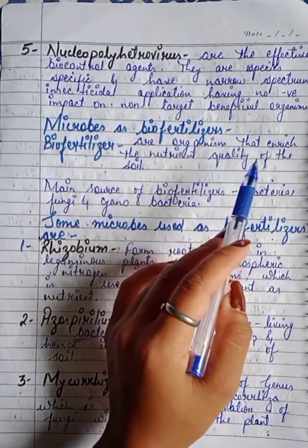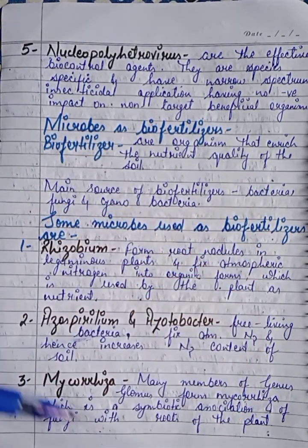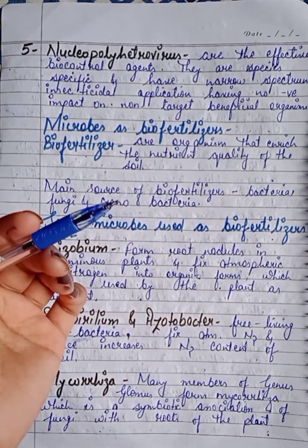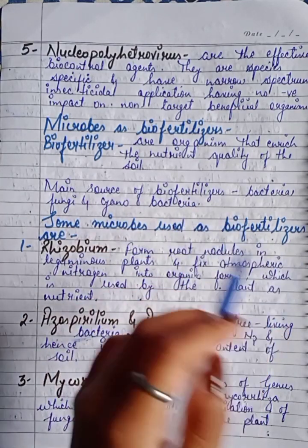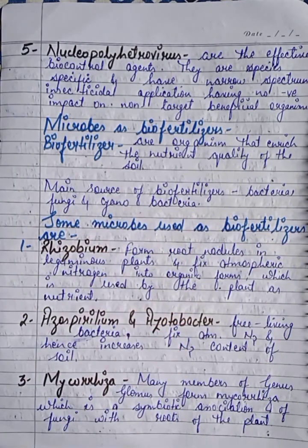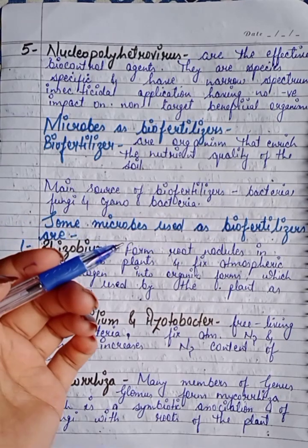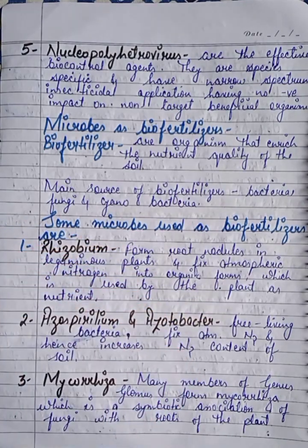Now we will look at microbes as biofertilizers. Biofertilizers are organisms that enrich the nutrient quality of soil — they increase the nutrient quantity in our soil. The main sources of biofertilizers are bacteria and cyanobacteria.